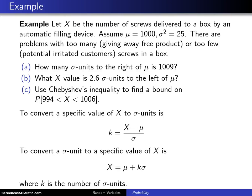Here is an example that illustrates Chebyshev's inequality. Let X be the number of screws delivered to a box by an automatic filling device. Assume that mu is equal to 1000 and sigma squared equals 25.